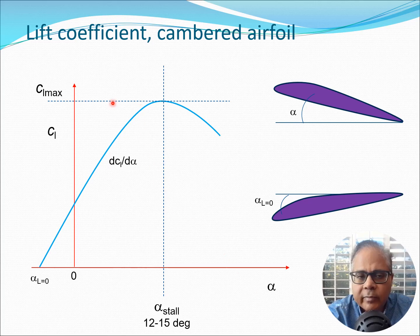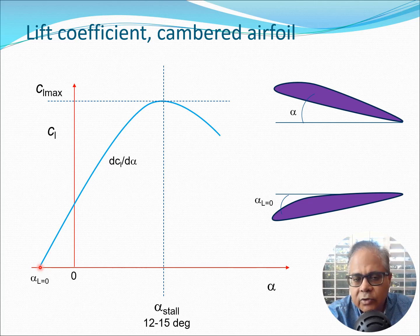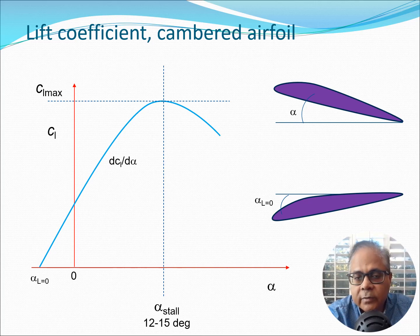The maximum value of lift is known as CL max. There is also a value alpha_L=0, which is the angle at which CL equals zero. This happens for a cambered airfoil because even at zero angle of attack some lift is generated, so you have to put it at a slightly negative angle for lift to become zero. The slope of the lift curve, dCL/d_alpha, is a very important parameter often known as the lift curve slope.